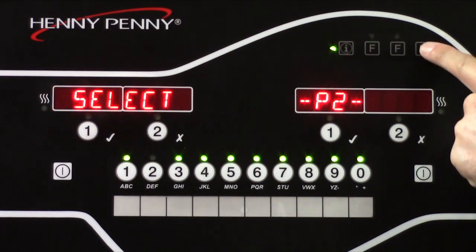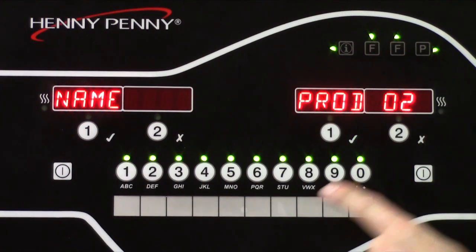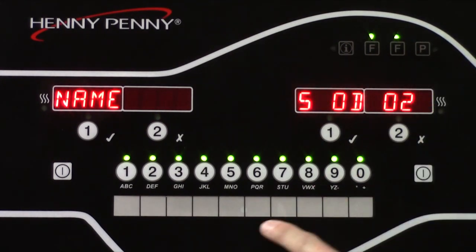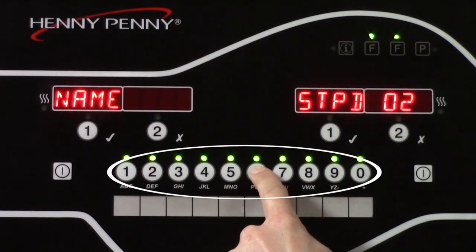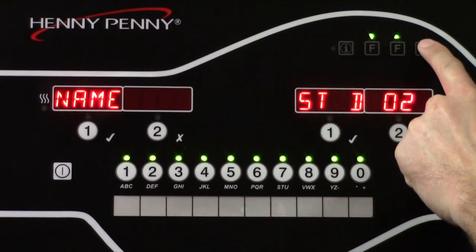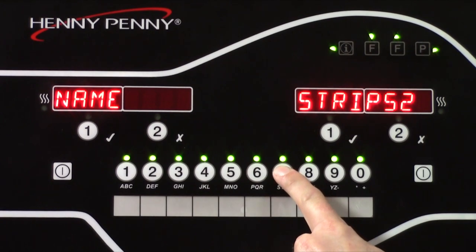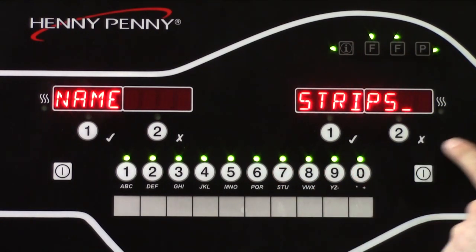Press the right program button one time and name appears in the display. Use the buttons at the bottom of the display to select the first letter, then advance to the next letter with the P program button. The letters are indicated under each button. For a blank space, use the zero button to find the underscore.